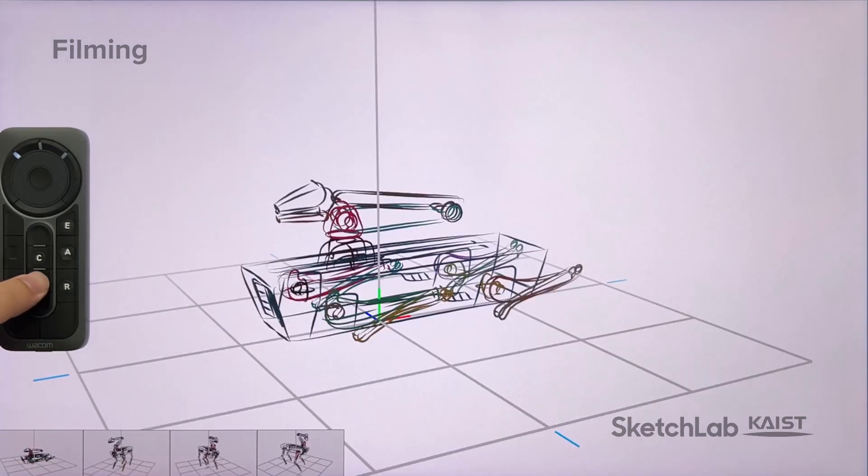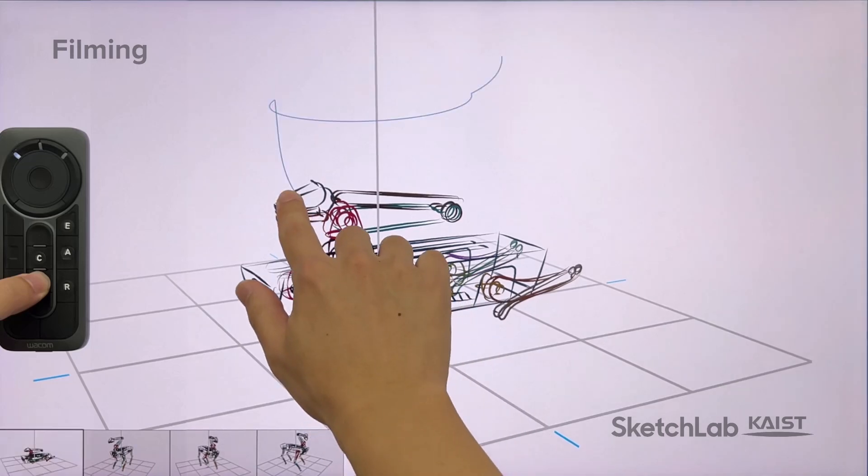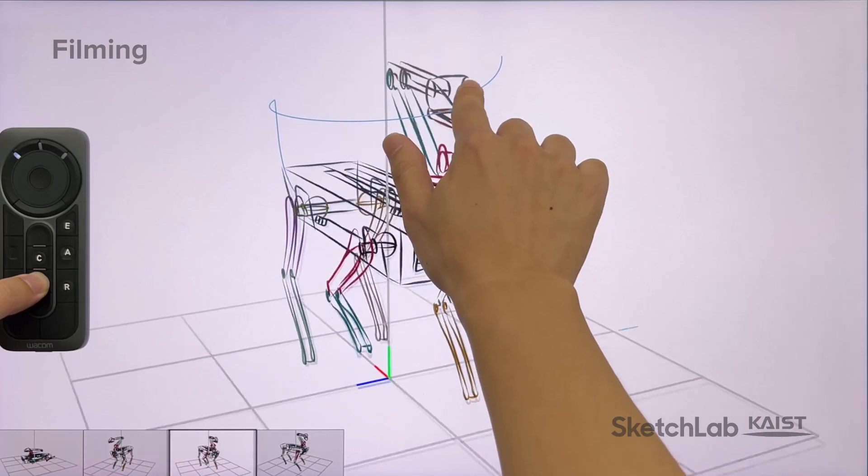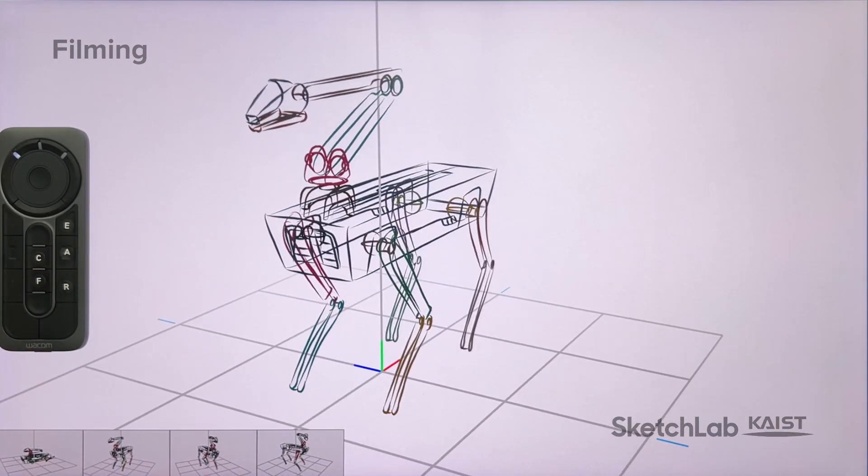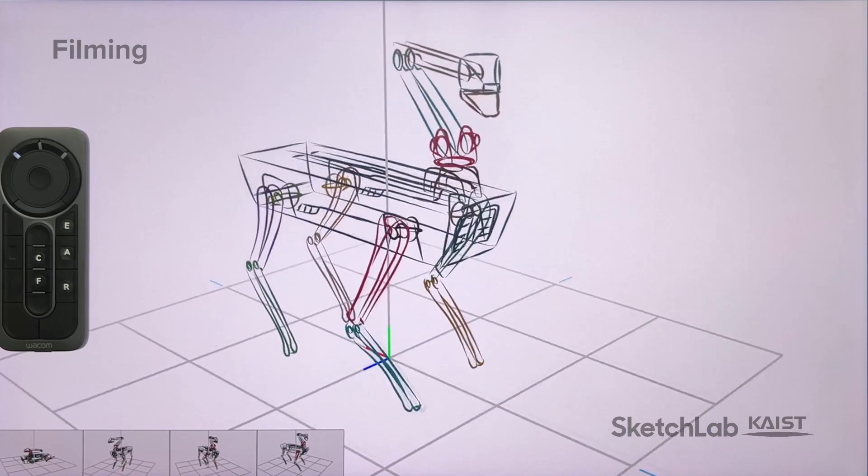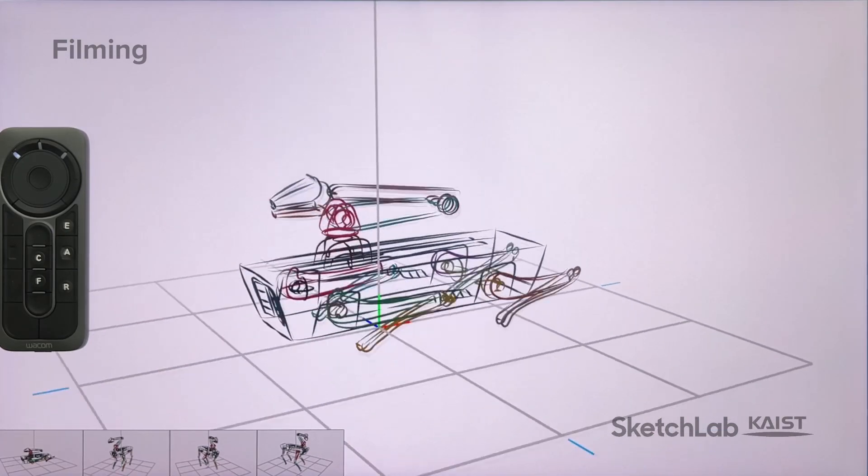While holding down the Follow Trajectory button, selecting a point reveals the screen-spaced trajectory of the point. The designer can drag along the trajectory at the desired speed to create a smooth animation connecting the keyframes. The animation is automatically saved and can be exported in a video or a CAD file format.